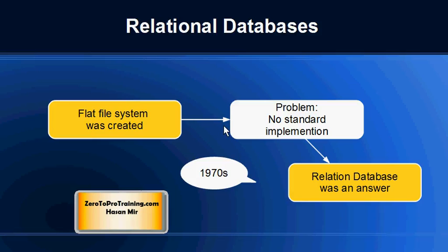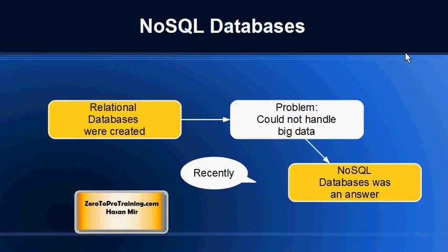If you go back in history, first flat file systems were created. And in the 1970s, Codd came up with a theory — relational theory — and based on that, relational databases were developed. The problem was that in flat file systems, there was no standard of storing data and no standard of communicating with the data. Everybody implemented their own protocol, and that was creating lots of inefficiencies. So relational databases standardized the way we communicate with the database.